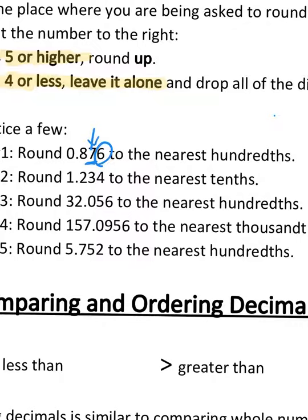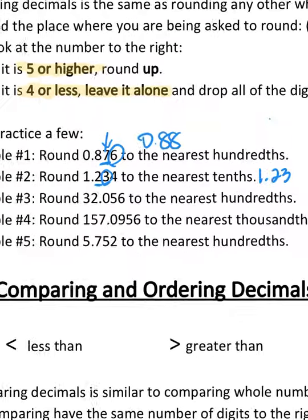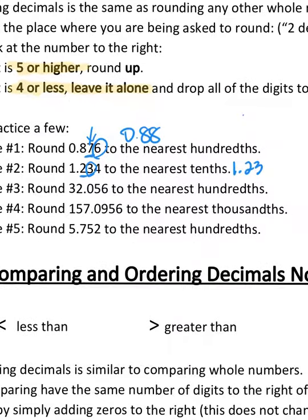Round 1.234 to the nearest tenth. Two is in my tenths place, three is right next door, that is four or less, so that's gonna stay the same, so it's gonna be 1.2. Let's see: 32.056 to the nearest hundredth. The nearest hundredth would be right there. I'm looking right next door, it is five or greater, so that would be 32.06.